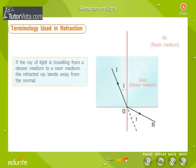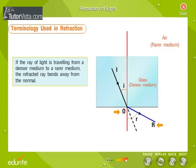If the ray of light is travelling from a denser medium to a rarer medium, the refracted ray bends away from the normal. Here, IO is the incident ray, OR is the refracted ray, I is the angle of incidence, and R is the angle of refraction. In this case, angle I is less than angle R.